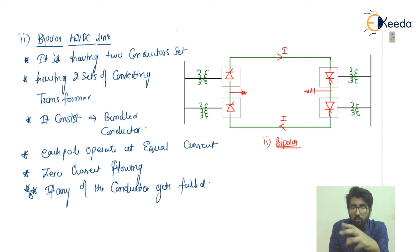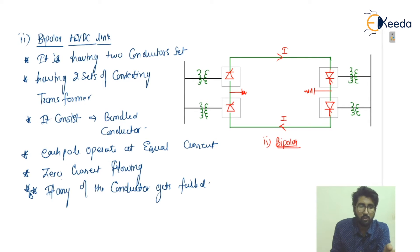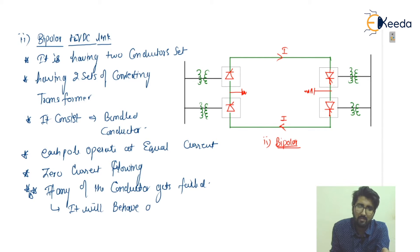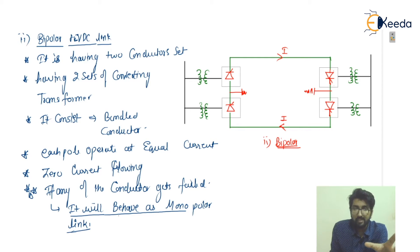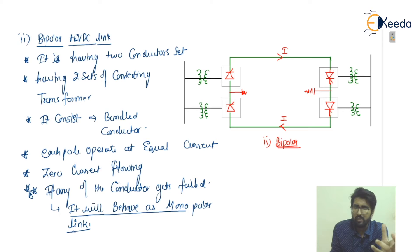So if any conductor gets failed, it will behave as a monopolar link. To summarize the bipolar link: it has two conductor sets each with two converting transformers, zero ground return under normal conditions, and each pole operates at equal current. If a conductor fails due to a fault or abnormal condition, it behaves as a monopolar link.